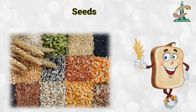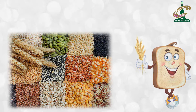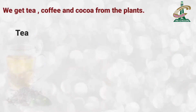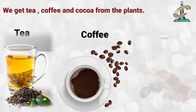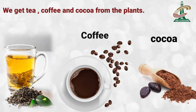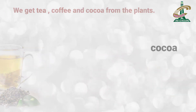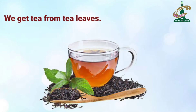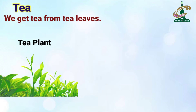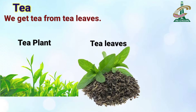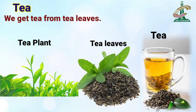Food grains बीज होते हैं plants के जो के हम खाते हैं. We get tea, coffee and cocoa from plants. We get tea from tea leaves. पहले tea plant होता है, tea plant से tea leaves लेते हैं, उनको dry करके crush करते हैं, then हमारे पास चाय की پتی تیار हو جاتی ہے.